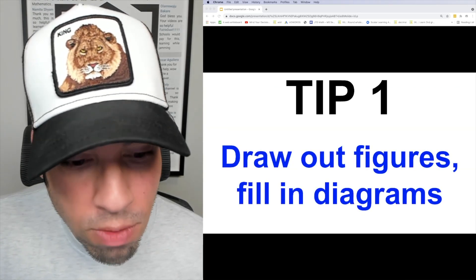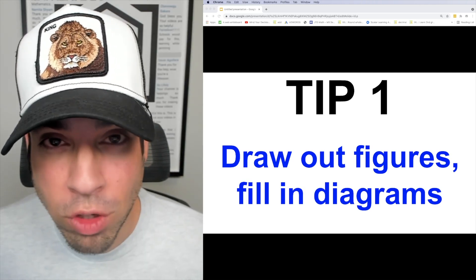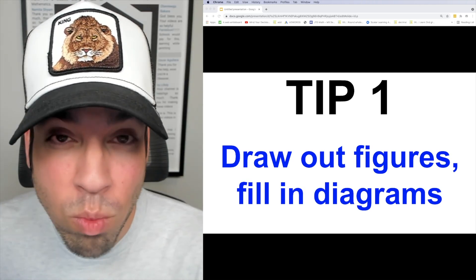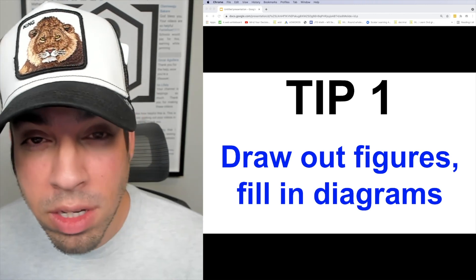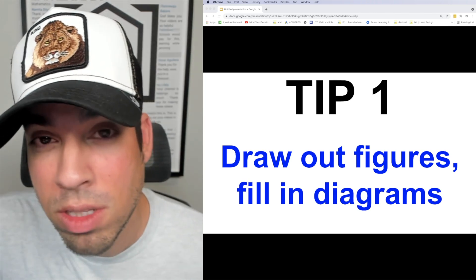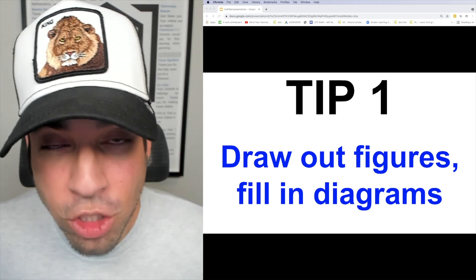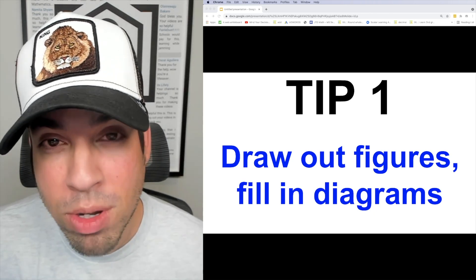Tip number one is to draw out all figures and fill in all diagrams. So whenever they mention a geometric figure, and in some cases they will but they won't provide a diagram, you've got to draw a diagram and fill it out. In other cases they'll have diagrams there but not all the information will be added in, not all the sides or the angle measures, etc. So make sure to take whatever information that's in that question and put it in a visual representation to give yourself the absolute best chance to nail that question accurately.